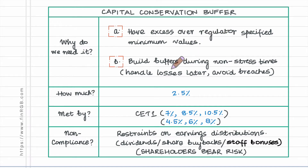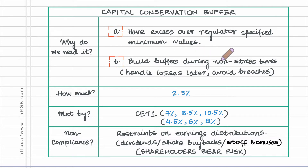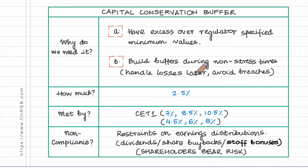The motivation behind the capital conservation buffer is to ensure that banks build up buffers — or let us say build up surpluses of capital — during normal or non-stressed times so that they are in a better position to handle any sort of losses that happen in later periods.